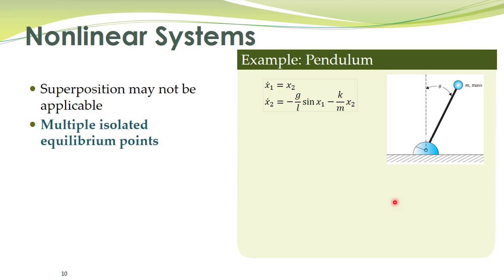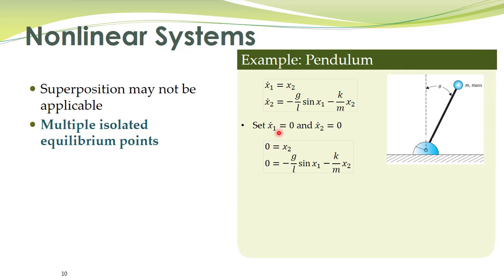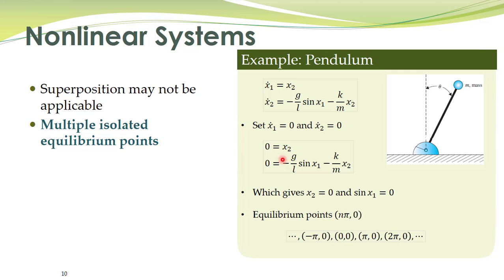Nonlinear systems may have multiple isolated equilibrium points, whereas linear systems can only have a unique isolated equilibrium point. An example is the pendulum system, governed by these state equations where the nonlinearity is the sine of x1. By substituting x1-dot and x2-dot equal to zero, we solve and find multiple isolated equilibrium points. This nonlinear system has at least two isolated equilibrium points, which is not possible in linear systems.